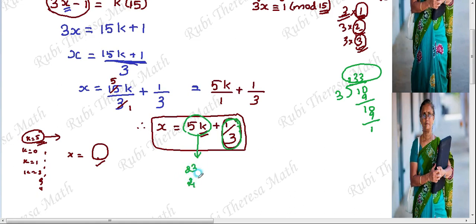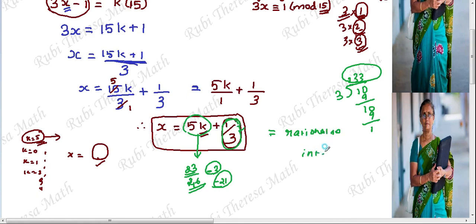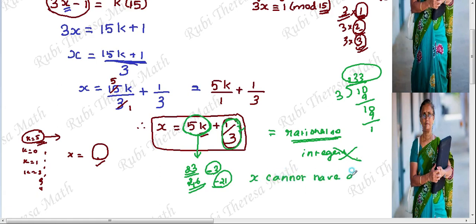Whatever integer you may get for 5k, when it is added to 1 by 3, which is a rational non-terminating decimal, the final answer will also be a decimal — a non-terminating decimal. So the final answer will not be an integer. Therefore, x cannot have any integer solutions in this problem.